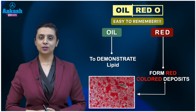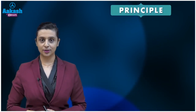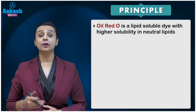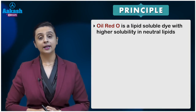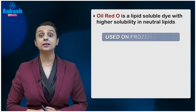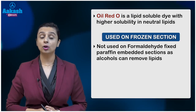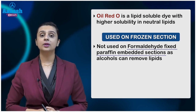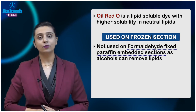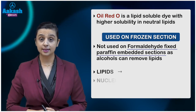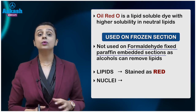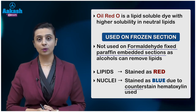Next, you need to remember the principle of using this special stain. Oil Red O is a lipid-soluble dye with higher solubility in neutral lipids. It is used on frozen sections and not on formaldehyde-fixed paraffin-embedded tissue sections, because alcohol removes most of the lipids. It demonstrates lipid in the form of red color deposits, and the nuclei are stained blue because of the counterstain hematoxylin used.